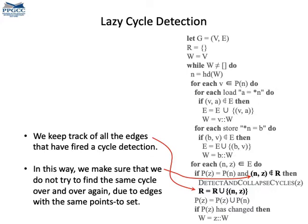We also add the edge NZ to a cache R of edges, so that we do not try to find cycles due to this edge again, in case it's still in the graph. That prevents the algorithm from trying to find the same cycle over and over.